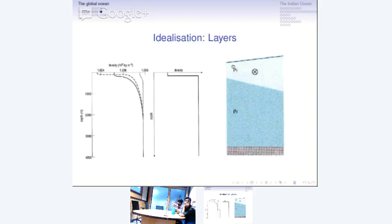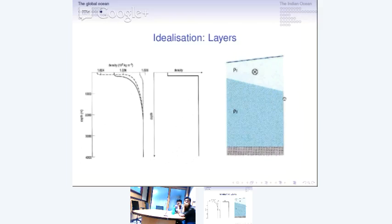For example, when you look at the picture we have here, you have upwelling out here and therefore sea level decreases. So wherever the thermocline or pycnocline comes up, the sea level drops. Wherever the thermocline or pycnocline goes down, the sea level goes up.